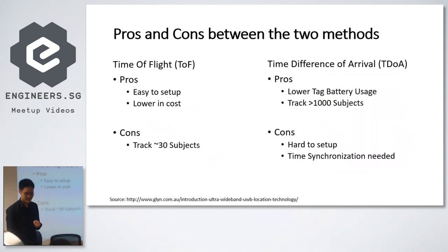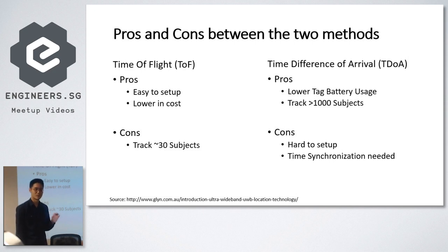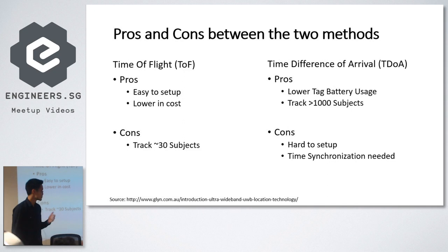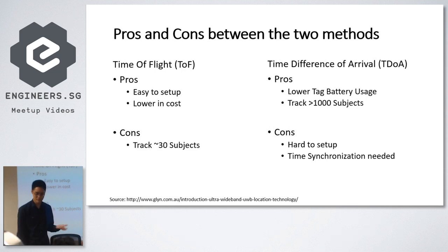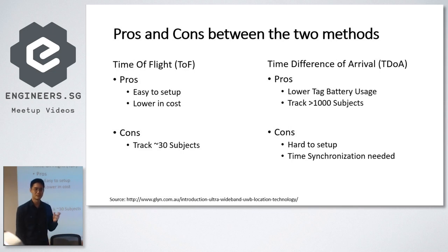Pros and cons of these two methods: The Time of Flight method is low cost and easier to set up. However, it is usually limited to about 30 subjects because it has to range one round of every single anchor. Time Difference of Arrival uses much lower battery life and is able to track 1000 or more subjects. However, it's very hard to set up — you need a lot more infrastructure, and time synchronization is needed, which is very sensitive. If one of the times is not synced, the system can collapse.